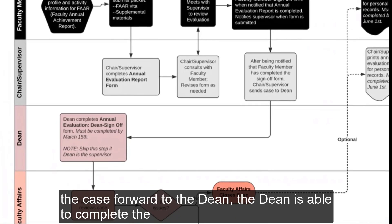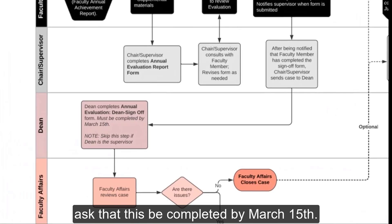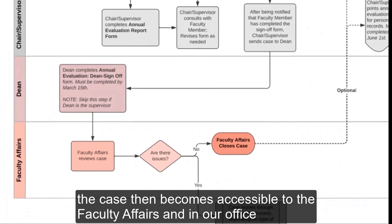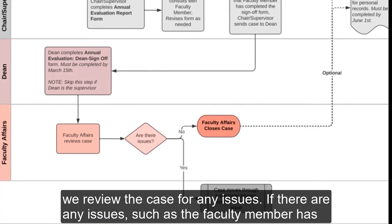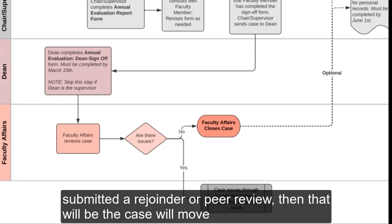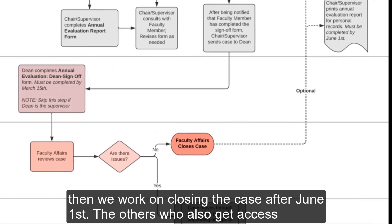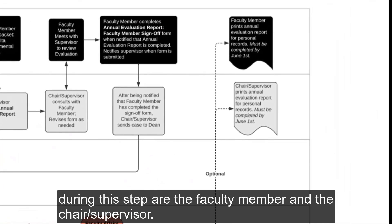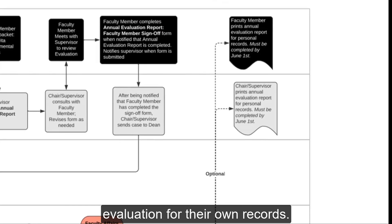Once the chair or supervisor sends the case forward to the dean, the dean completes the annual evaluation dean sign-off form, and we ask that this be completed by March 15th. Once the dean finishes their review and sends the case forward, the case becomes accessible to Faculty Affairs. We review it for any issues. If the faculty member has submitted a rejoinder or peer review, the case moves through a separate process outside of UNLV Folio. If there are no issues, we work on closing the case after June 1st. Both the faculty member and the chair or supervisor should print a copy of the fully executed evaluation for their records.